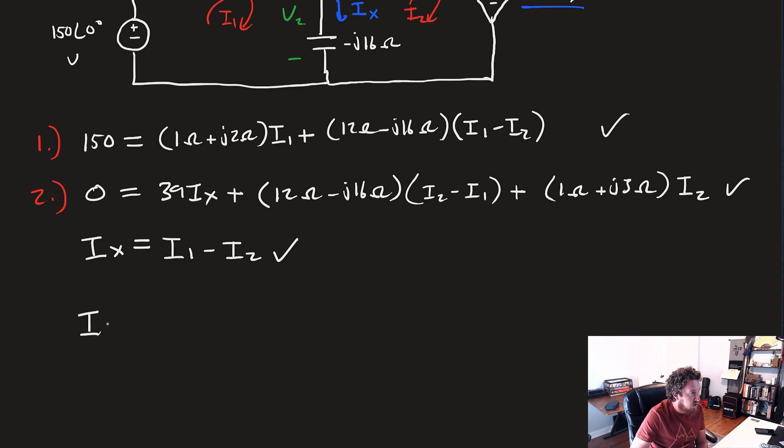You're going to get that I1 is equal to minus 26 minus j52 amps. And finally, our Ix is just the difference of those guys, minus 2 plus j6 amps.